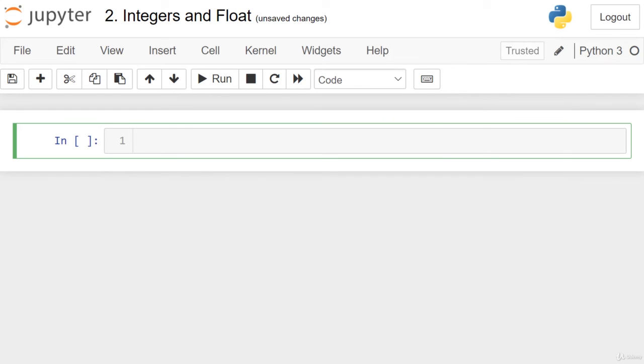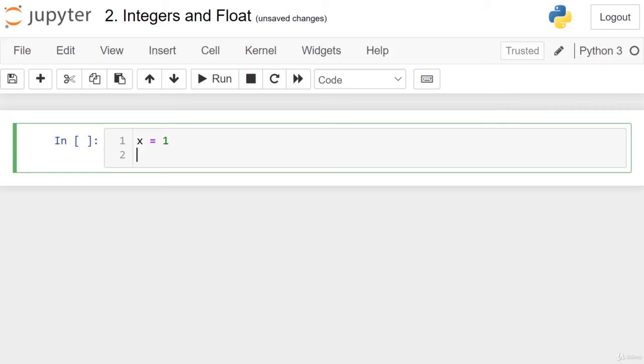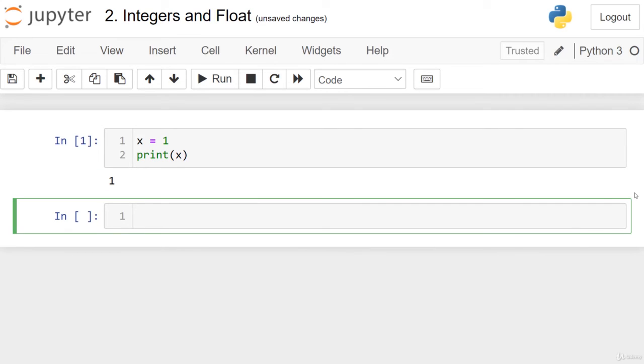So here we are in the Jupyter Notebook. Let's try to create a variable here and say that x equals 1. Now, if we print x using the print function, which takes a variable and prints this variable, we see that x equals 1.